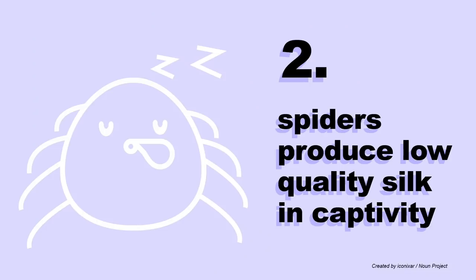On the other hand, in captivity, spiders lose the ability to make high-quality silk. The reason is, we are feeding the spiders, and therefore, there is no need to get high-quality silk webs to hunt prey.